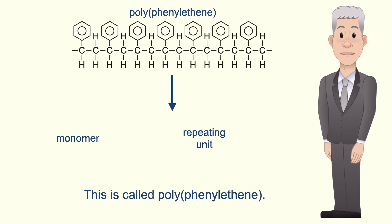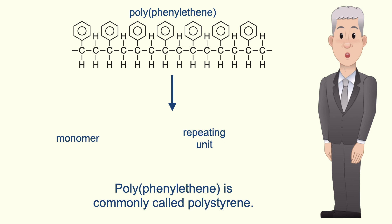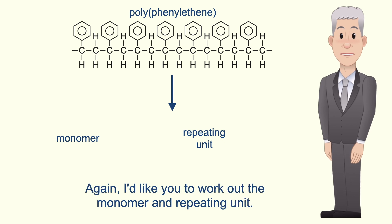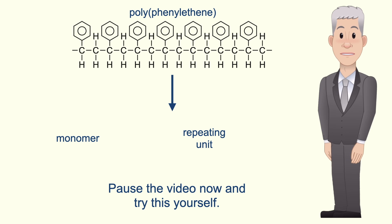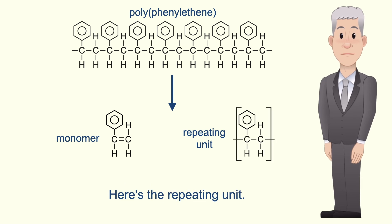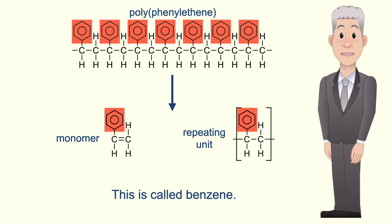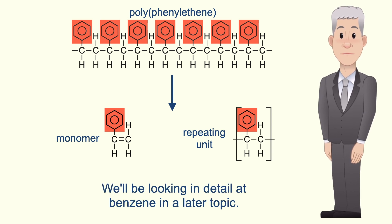Here's another polymer called polyphenyl ethene, which is used to make foam food containers and drinks cups. Polyphenyl ethene is commonly called polystyrene. Work out the monomer and the repeating unit — pause the video now and try this yourself. The monomer is phenyl ethene, and here's the repeating unit. The side group in phenyl ethene is called benzene, and we'll be looking at benzene in detail in a later topic.